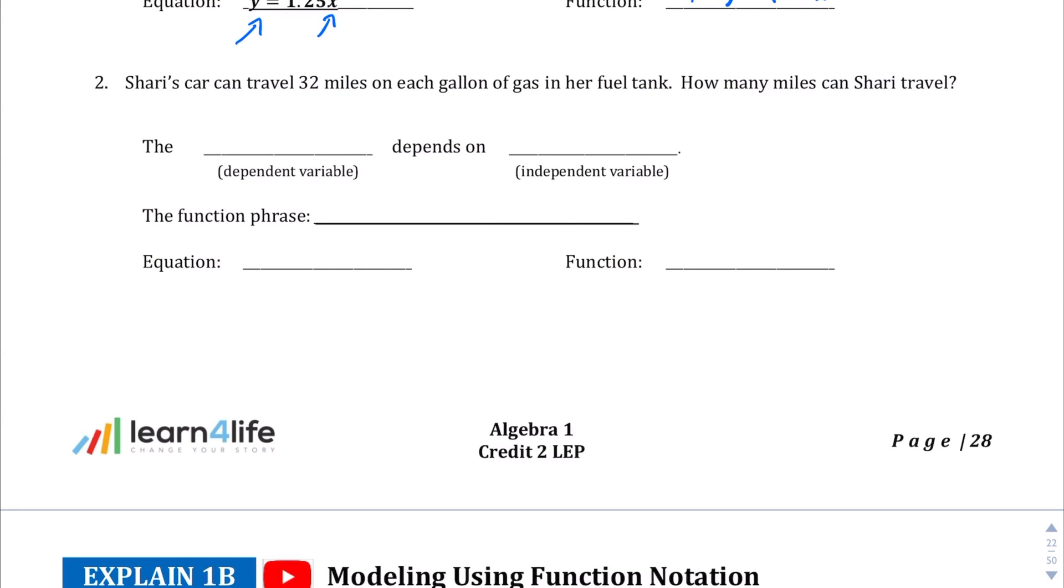Question number two: Shari's car can travel 32 miles on each gallon of gas in her fuel tank. How many miles can Shari travel? So the dependent variable of miles depends on gallons of gas in her car. Right, if she doesn't have a lot of gas in her car, she's not going to go as many miles.